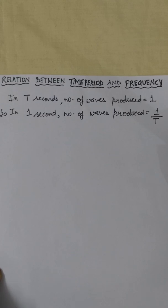Time period is the time required to produce one complete wave, is called time period of the wave. And frequency is the number of waves produced in one second.